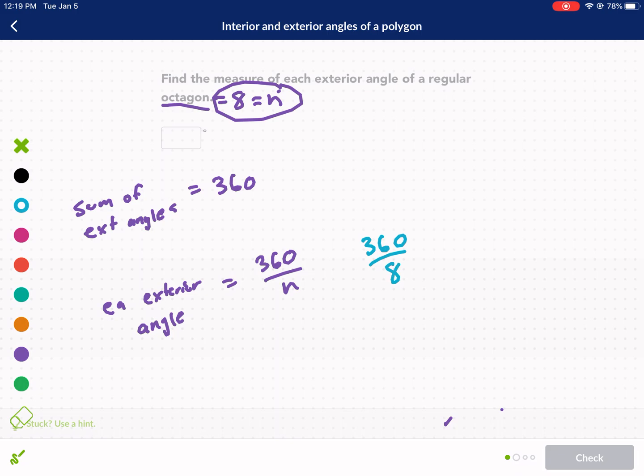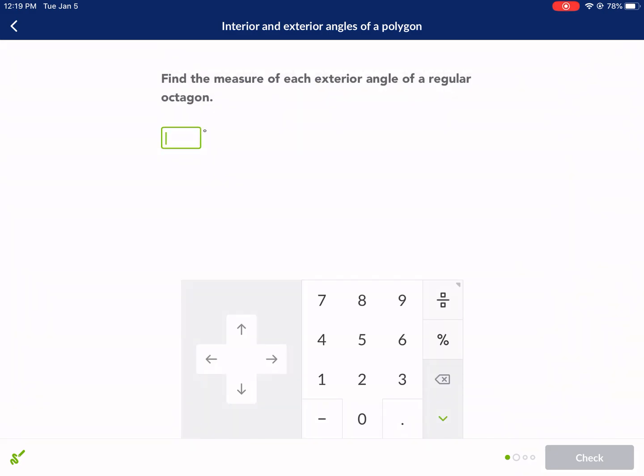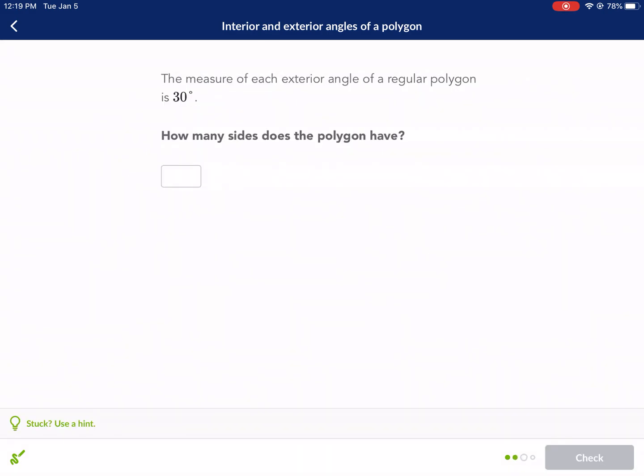So all we're going to do here is simply do 360 divided by 8, and that's going to tell us our answer. So we do 360 divided by 8, and that equals 45. So we know that each exterior angle is going to be equal to 45 degrees. Moving on to the next one.